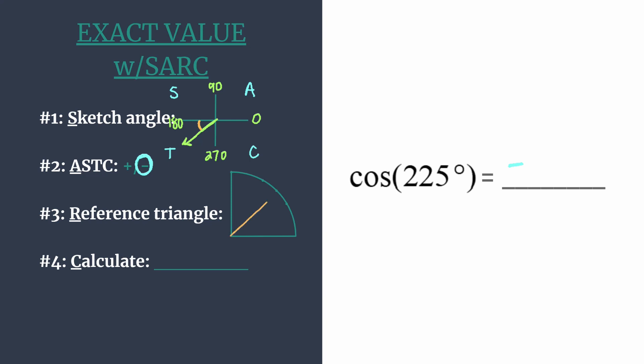That means we're working with the special right triangle that is a 45-45-90 special right triangle. We can draw it here just in the first quadrant. That's how we're going to get the coordinates. We've already decided our final answer is negative, so no need to think about positive or negative. We're just working with those first quadrant values.